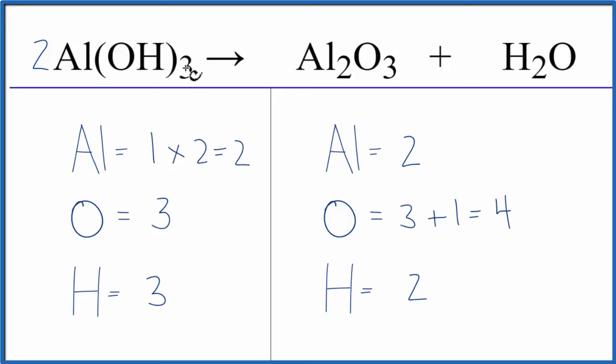Oxygens, we have three times the one. So we have the three oxygens, and then the two times that. So we have six oxygen atoms. And then hydrogens, we have the three times the one. So we have three hydrogen times the two. Six hydrogen atoms.